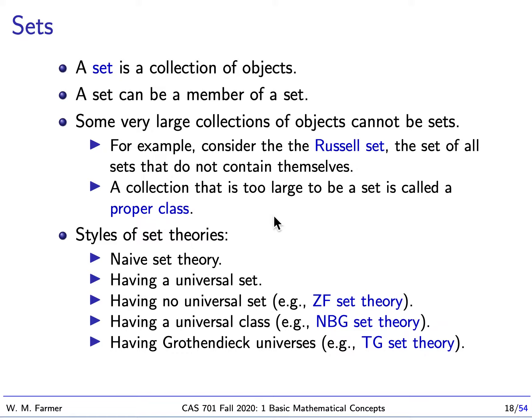A set is just a collection of objects, and a set can be a member of a set — this is what gives sets a lot of power. Sets can include sets as members. Some collections of objects cannot be sets, and the best example of this is the Russell set.